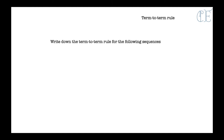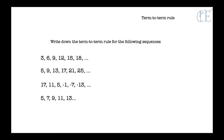Write down the term to term rule for the following sequences. If you want to pause the video and have a go, please do. So: add 3 for this one, subtract 4, subtract 6 and add 2. So that's the first bit — nice and easy. As long as you can do that, you're fine.